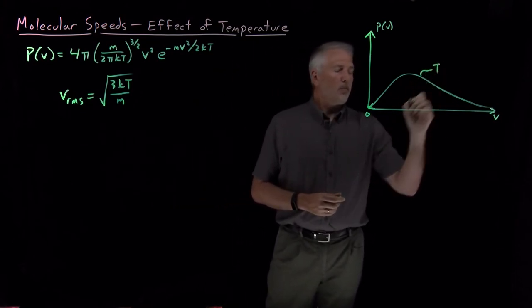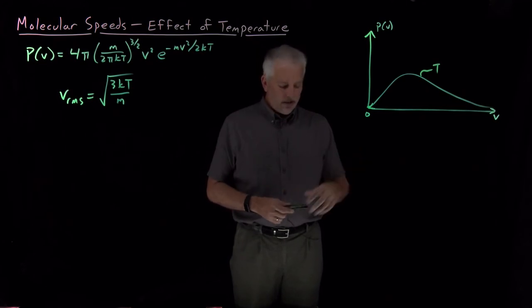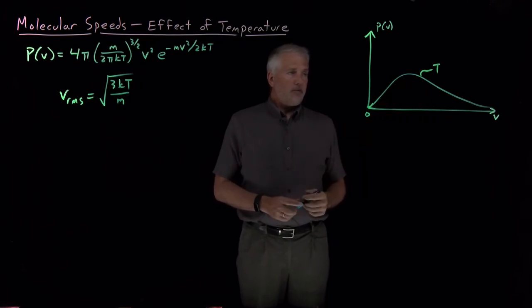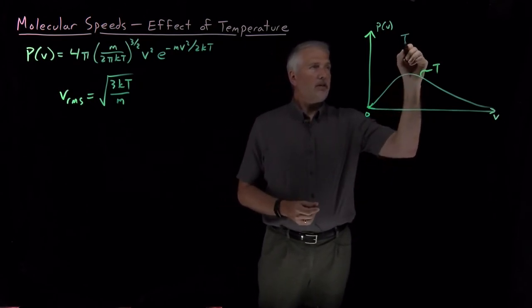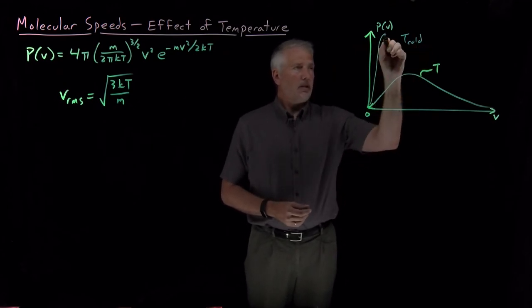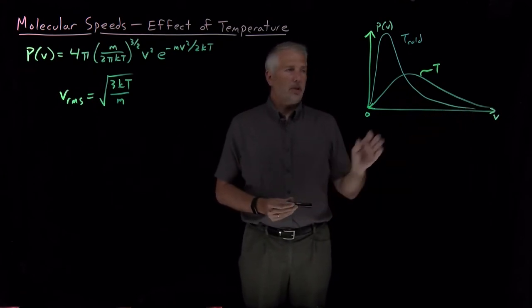If I plot what this Maxwell-Boltzmann distribution looks like for several different temperatures—if I plot it at one temperature, the temperature T I've written here looks like this. If I do it again at a colder temperature, then the distribution is going to look something like this.